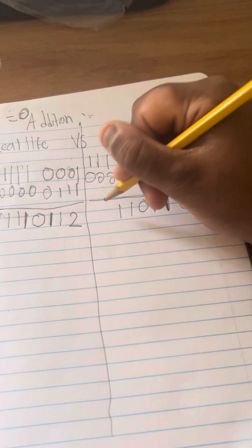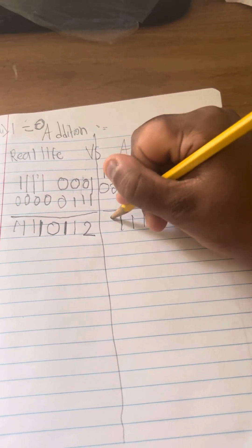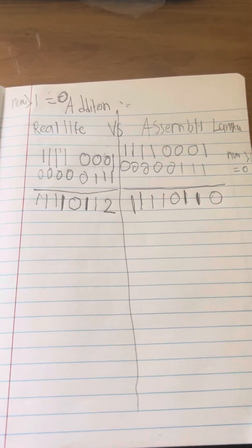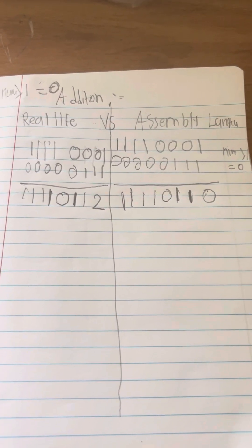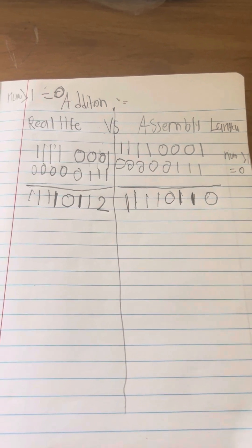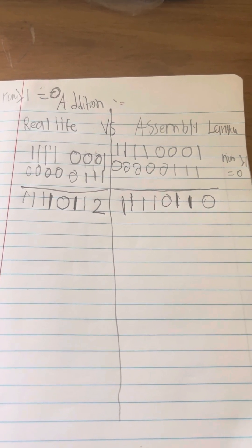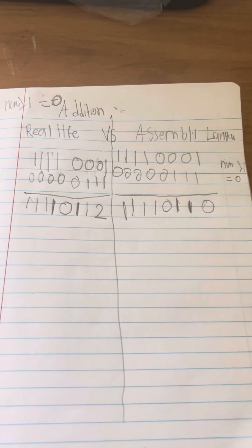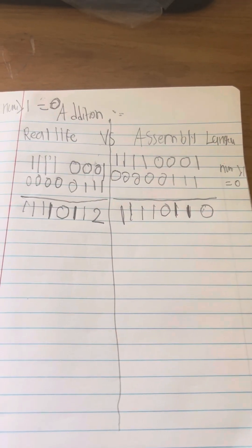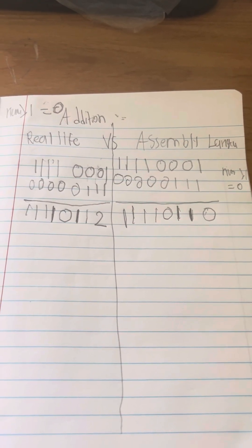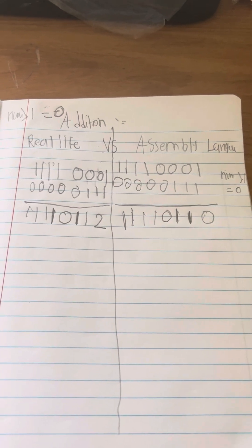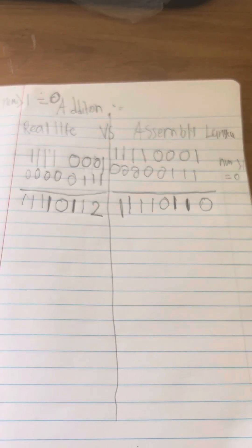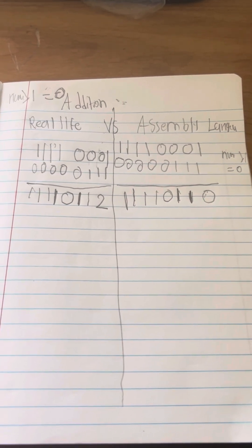One, one, one — as you can see, the difference between real life addition and assembly language addition is that numbers cannot be greater than one; it can only be zero or one. So if one plus one is two, it has to equal zero. And if it's two plus one equals three, in assembly it perceives it as zero. And that is it.